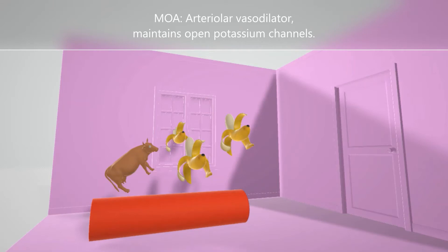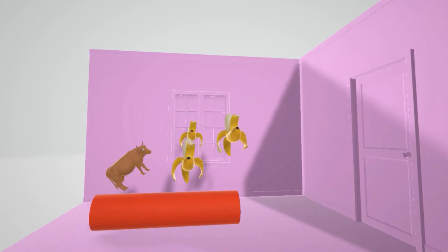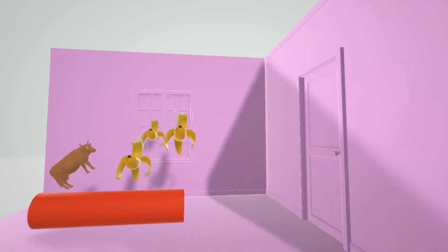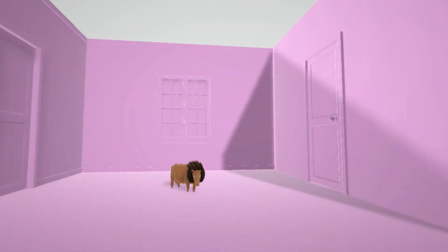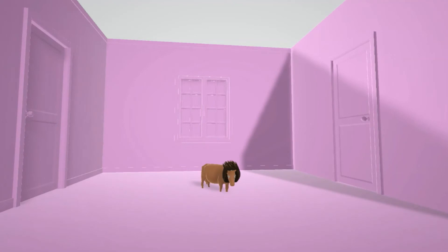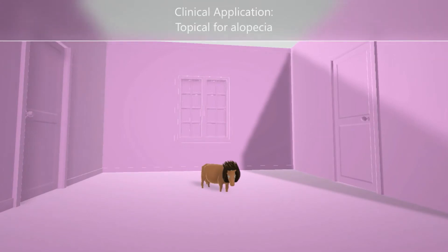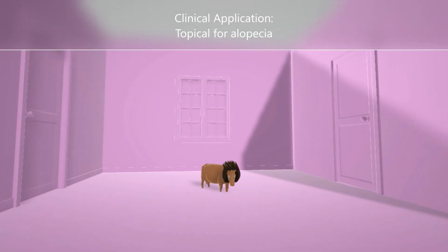Minoxidil was originally used as an anti-hypertensive drug. In terms of hair growth, it increases microcirculation, which allows more oxygenated blood and nutrients to reach the follicle, increasing hair growth. The clinical application for minoxidil is hair growth — it is a topical treatment for androgenic alopecia.